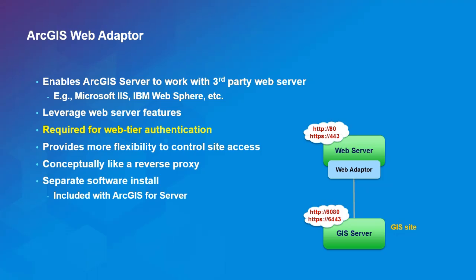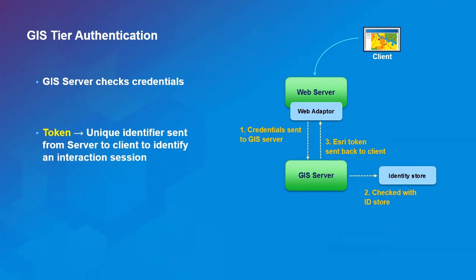In GIS tier authentication, the client makes a request either directly or through a WebAdapter. The WebAdapter simply forwards the request to the GIS server, which then attempts to authenticate the user via the identity store — Active Directory, LDAP, custom database, or built-in. If authenticated, the GIS server mints an Esri token and sends it back to the client, and the client uses that token to access services.